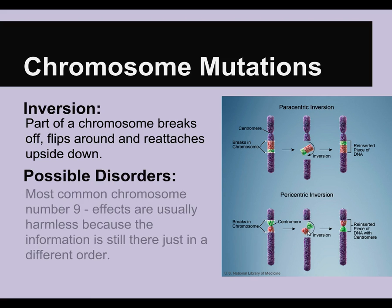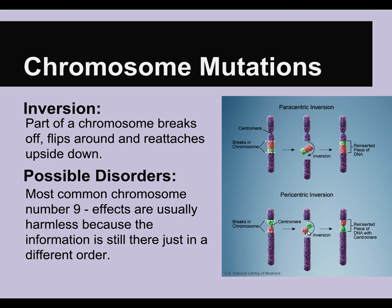The possible disorders with inversions — for some reason, the most common inversion occurs on chromosome number 9 in humans. For the most part, the effects of this are generally harmless. The information is still there; it's just in a different order. So for the most part, inversions are not as harmful as deletion mutations.